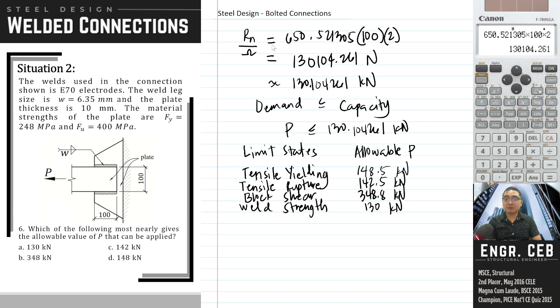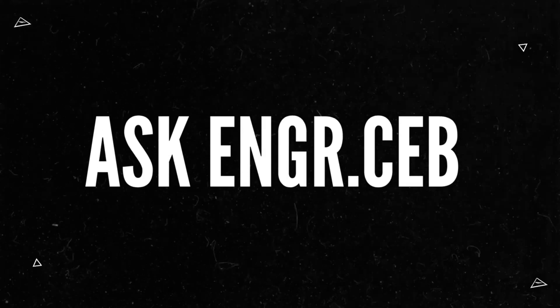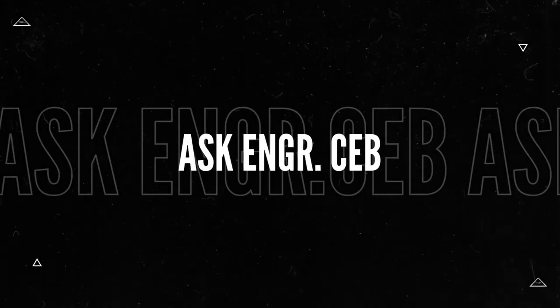We need to choose the allowable value of P that can be applied. As you can see, if you read the problem, allowable value of P that can be applied, it is not indicated in the problem based on what limit state. So it's not specified which limit state. So that means you have to compare all the limit states. So the governing limit state is the lowest, which is 130, coming from the weld strength. And that is letter E.